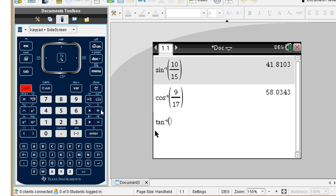And we put square root of 104 over 11, and we get an angle rounded to the nearest hundredth of 42.83 degrees.